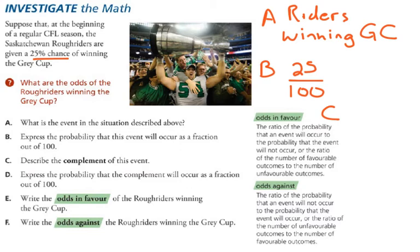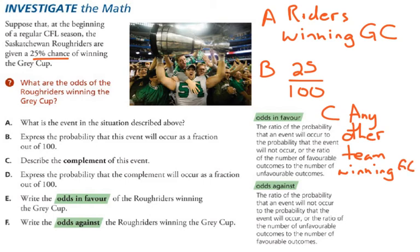Part C asks for the complement of the event. The complement is everything else. Your gut might tell you that the complement would be the Riders losing the Grey Cup, and that is one piece of the complement. Everything else that could occur in a CFL season besides the Riders winning the Grey Cup is any other team winning the Grey Cup. If we say the Riders losing the Grey Cup, that would mean they actually made the Grey Cup game — but they don't have to make the Grey Cup in any given season. So we need to be as specific as possible here.